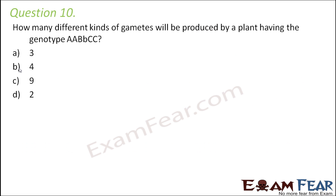Question number 10. How many different kinds of gametes will be produced by a plant having the genotype capital A, capital A, capital B, small b, capital C, capital C?